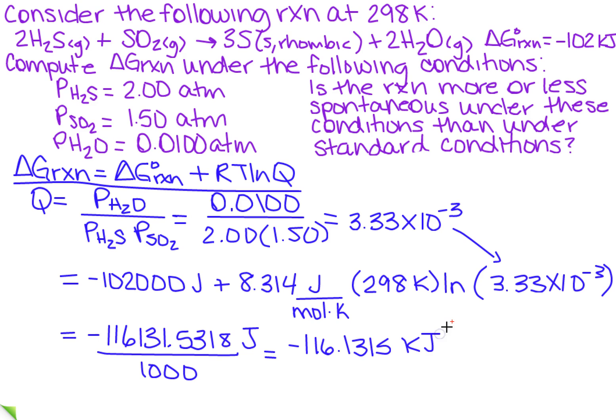But how many significant figures do I want? Well, all of my pressures had 3, so I need to have 3 in this answer. So it's going to be negative 116 kilojoules. Okay, that's half the problem.